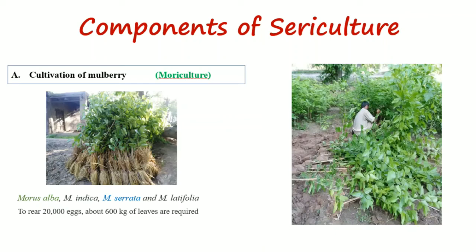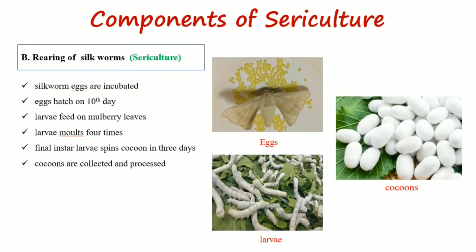In this video we will discuss the components of sericulture, that is the rearing of silkworms. For this purpose you first need to perform moriculture, that is the cultivation of mulberry. Different species of mulberry can be cultivated, including Morus alba, Morus indica, Morus serrata, and Morus latifolia. Almost 600 kilograms of leaves are required for rearing 20,000 eggs of silkworms, because silkworms prefer to feed upon mulberry leaves.